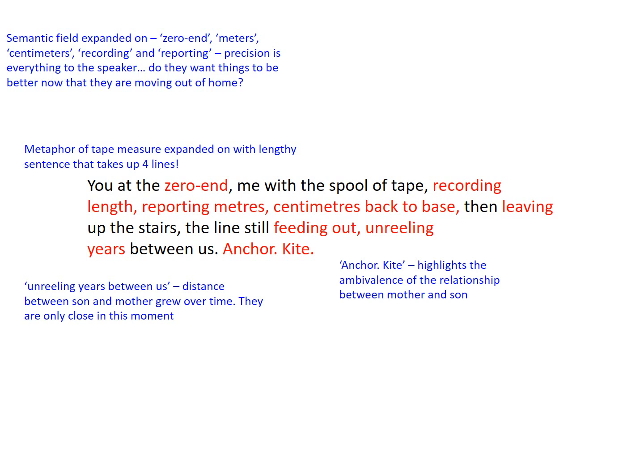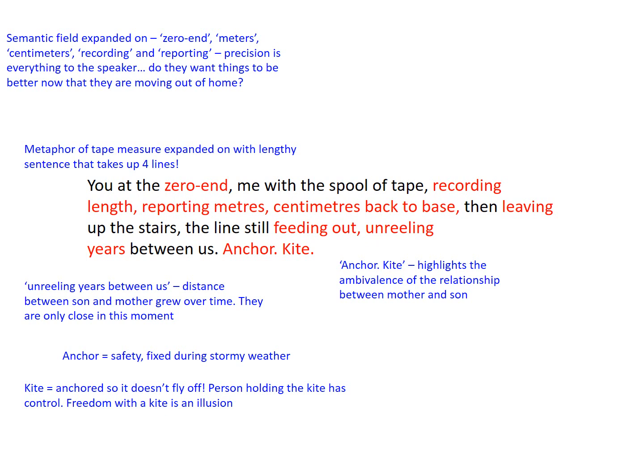An anchor is associated with safety, something fixed during stormy weather — yet a kite is anchored so it doesn't fly off. The person holding the kite has control, but freedom with a kite is an absolute illusion because it's controlled by the wind. This is a strange mixed metaphor — kites don't have anchors, ships have anchors — and the images aren't as close as we might suspect, perhaps mirroring the fact that mother and son aren't as close as we might expect.